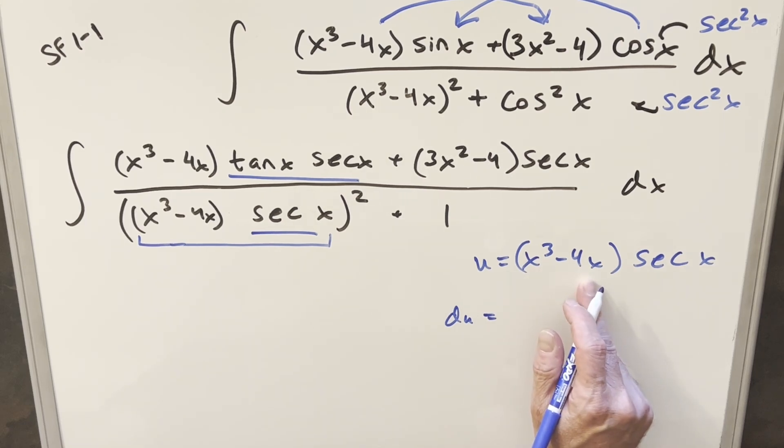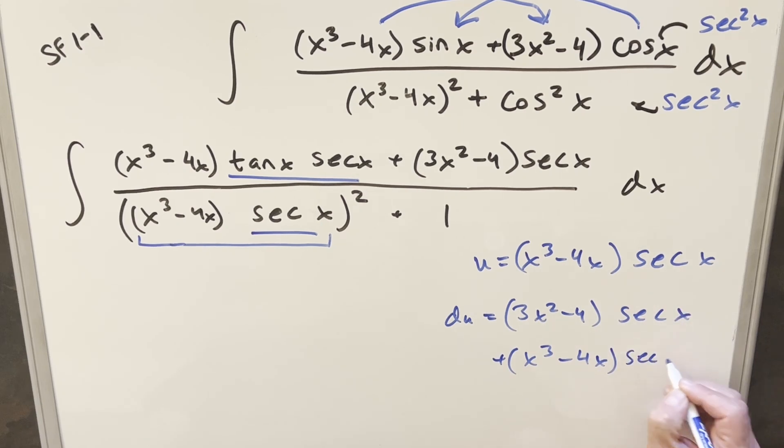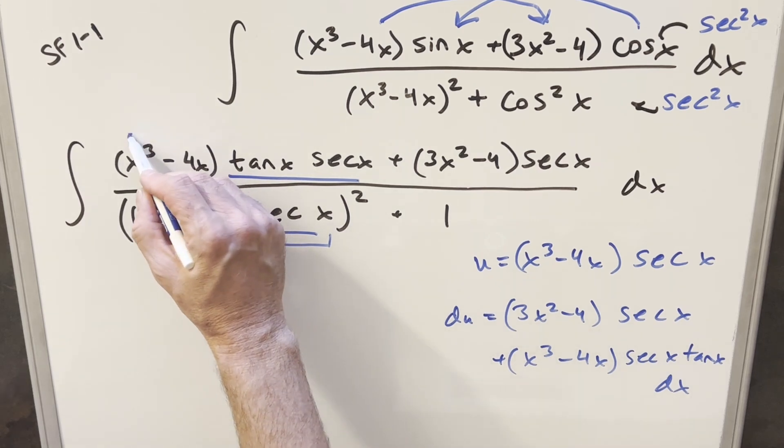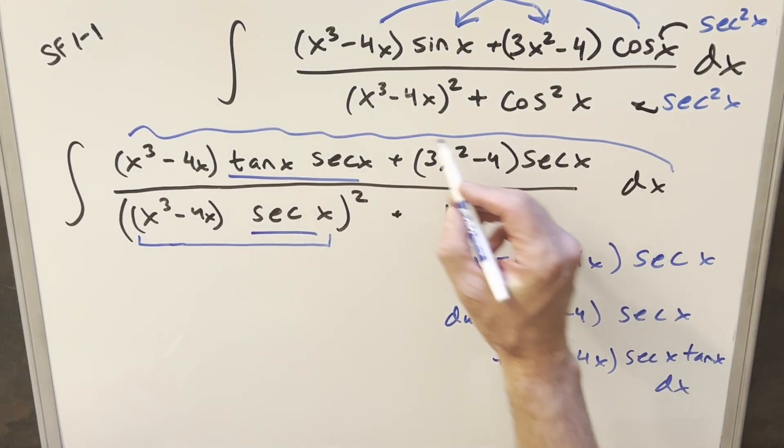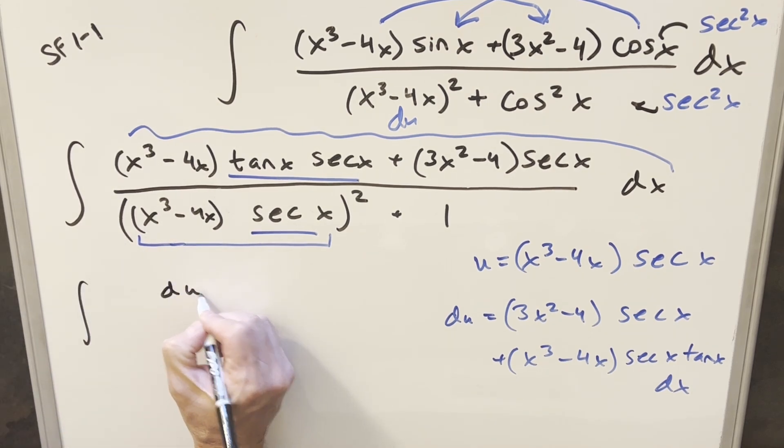And then I'll take the derivative with product rule. So first, the derivative of this part right here is going to be 3x squared minus 4 times secant x. And then the second part, we're just going to bring down x cubed minus 4x. Derivative of secant is secant x tan x dx. So now what just happened is the whole numerator here, all this stuff is going to be just the du. And so I'll go ahead and substitute, and then the whole thing just simplifies down to du.